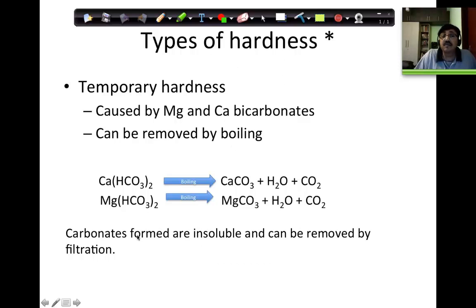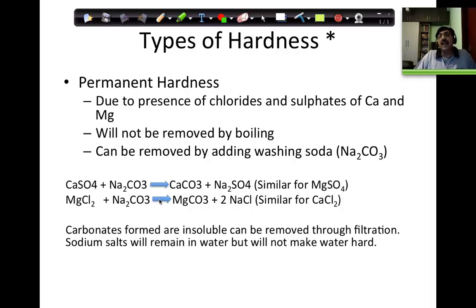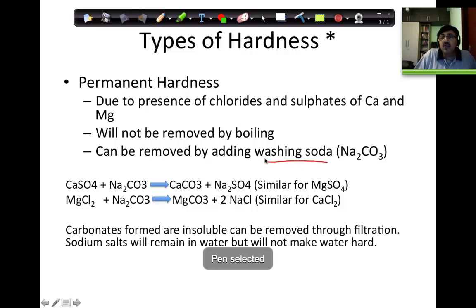So if the area where you are living has hardness because of bicarbonate — and you will only know if you test the water — then you simply need to boil the water. The bicarbonates will get converted to carbonates, the carbonates will precipitate, and you can just filter out the carbonates from the water and get soft water. Because the calcium and magnesium carbonates are not soluble in water, they will precipitate. Temporary hardness can be very easily removed like this.